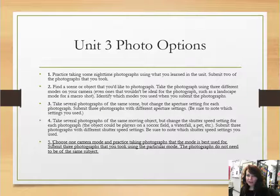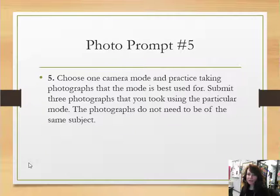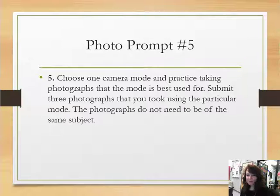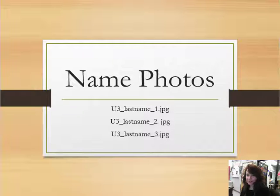In Unit 3 the photo options there are five to choose from, but we're going to do number 5. All of the units use prompt number 1 except Unit 3, which uses prompt number 5. That says: choose one camera mode and practice taking photographs with what that mode is best used for. Submit three photos taken using that particular mode — the photographs do not need to be of the same subject, just the same mode. Please name your files 'U3_lastname_1', 'U3_lastname_2', and 'U3_lastname_3' so when I download them they don't get mixed together.